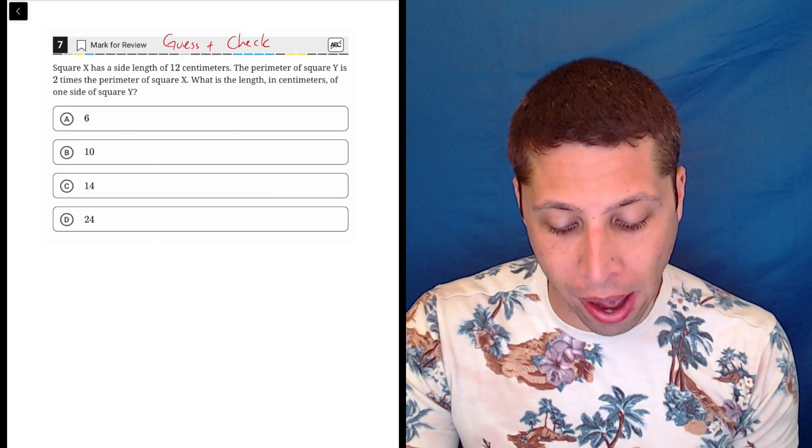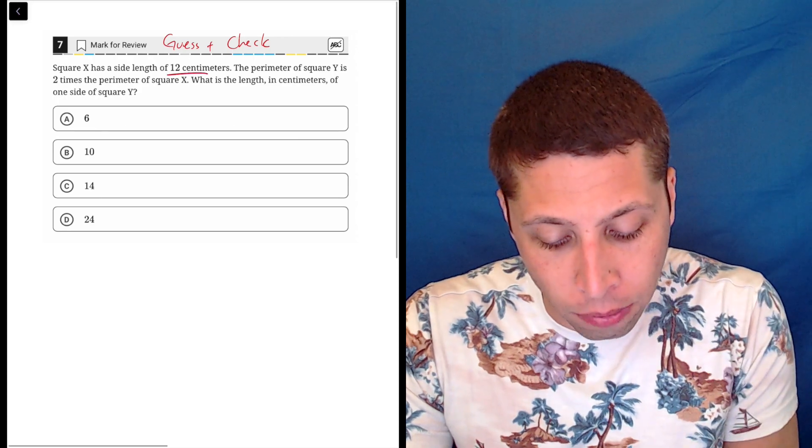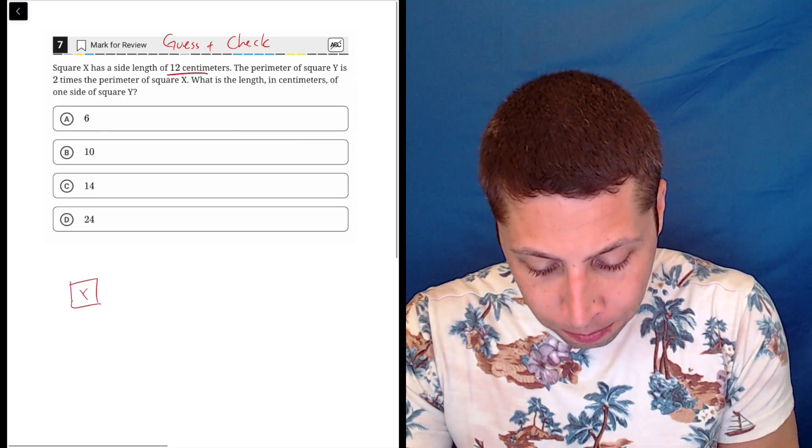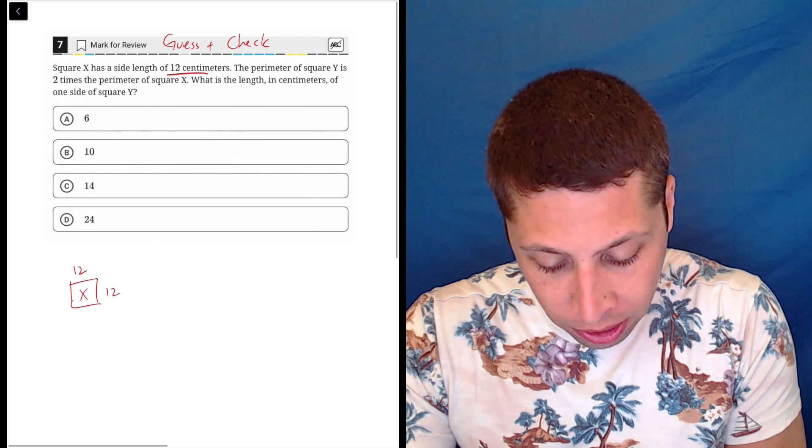Those are the side lengths of square y. So let's just start with square x, which we know enough about. Square x has a side length of 12 centimeters. So square x is here and 12 centimeters on the side.